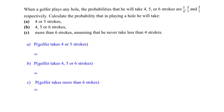Hello everyone, welcome to this video. We are given the probabilities that when a golfer plays any golf hole: if he took four strokes to complete it, the probability will be one quarter; five strokes to complete the hole, two over seven; six strokes will be three over seven. Calculate the probability that when playing a hole he will take four or five strokes.